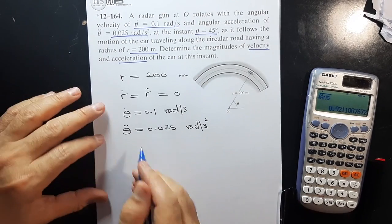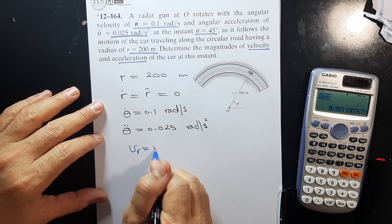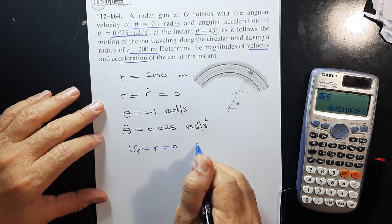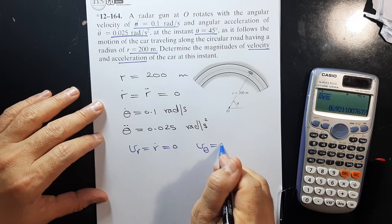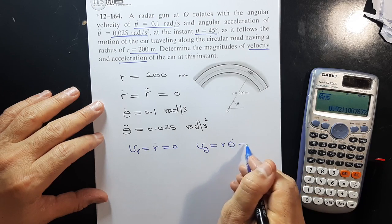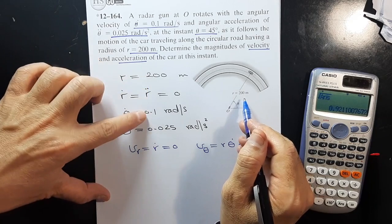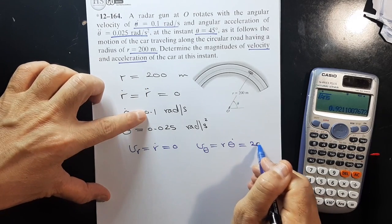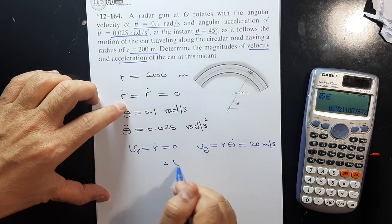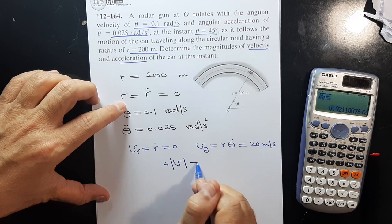We have vr which is ṙ equals zero, and vθ which is r θ̇ will equal 200 times 0.1, which is 20 meters per second. So v equals 20 m/s.